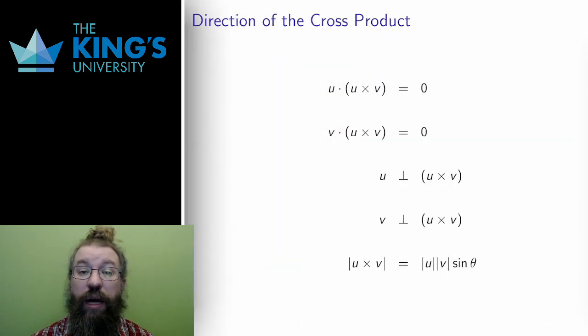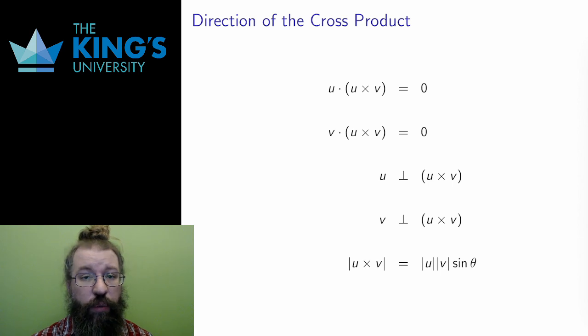The cross product outputs a vector. Unlike the dot product, which took two vectors and gave a scalar, this product produces another vector. For this reason, in some context, the cross product is called the vector product. And this is a pretty poor terminology for obvious reasons, which is why I don't use it in the course, but it's good to be aware.